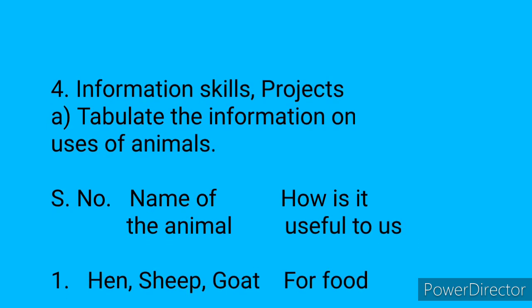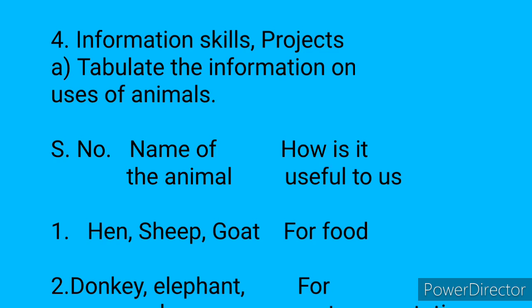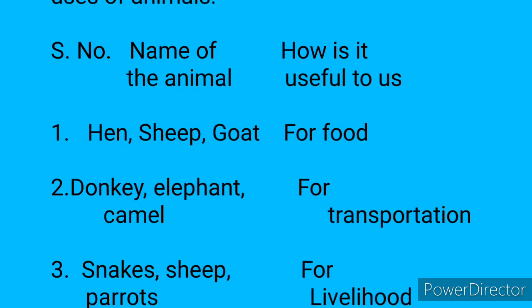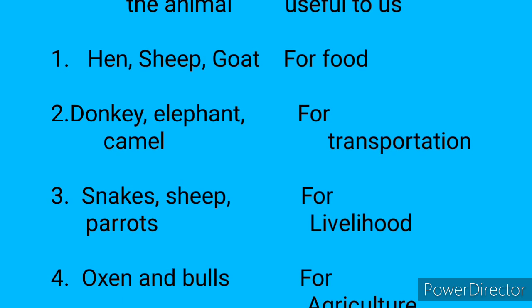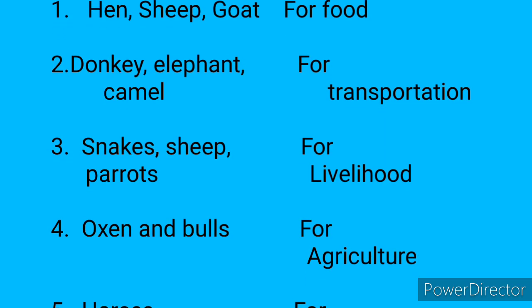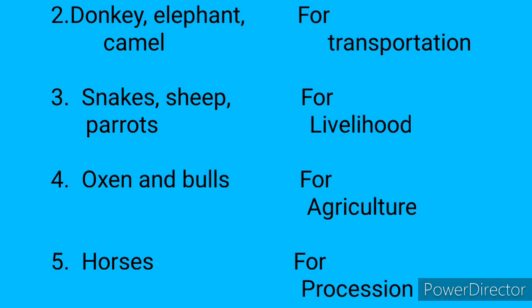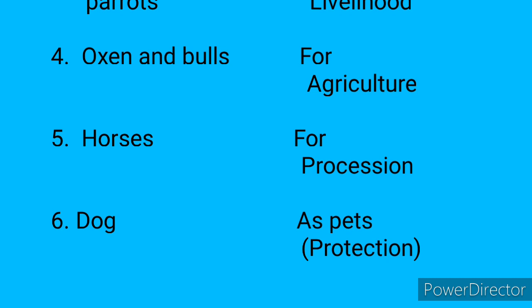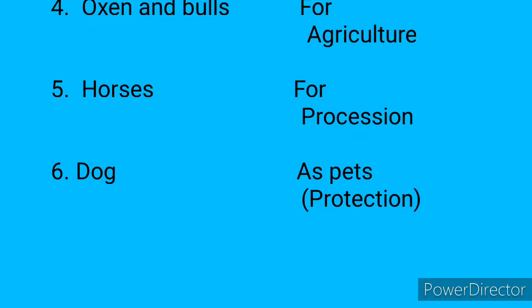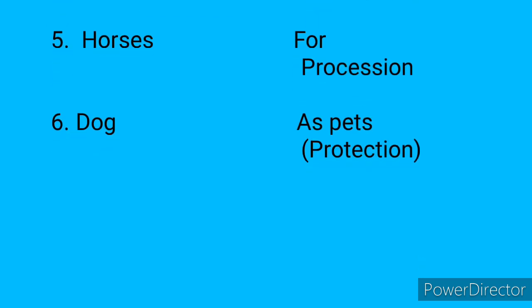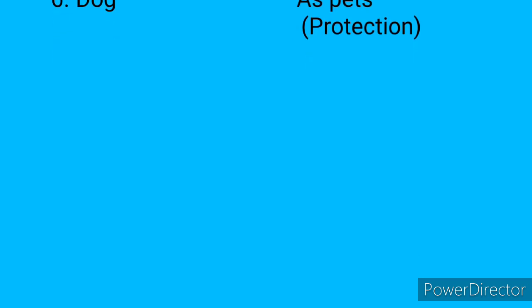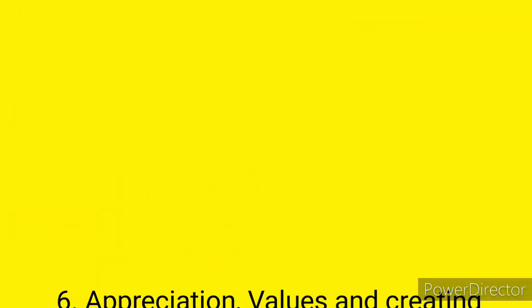The table has serial number, name of the animal, and how it is useful to us. First: hen, sheep, goat — for food. Second: donkey, elephant, camel — for transportation. Third: snakes, sheep, parrots — for livelihood. Fourth: oxen and bulls — for agriculture. Fifth: horses — for riding. Sixth: dog — as pets and for protection.